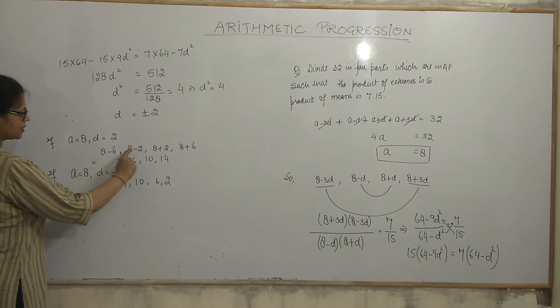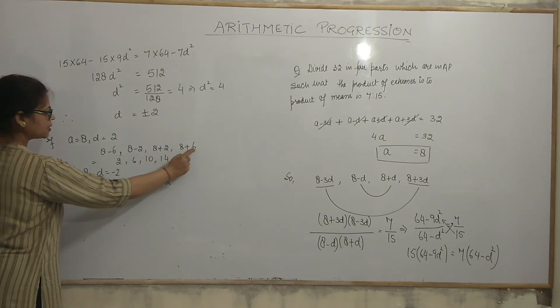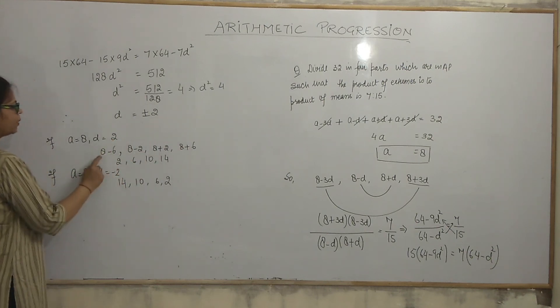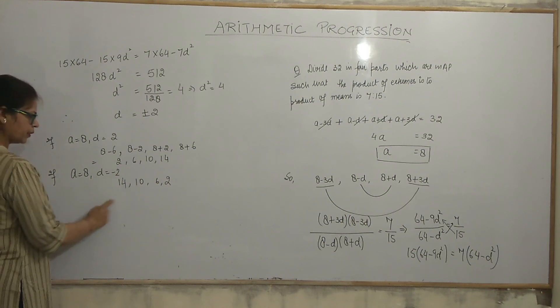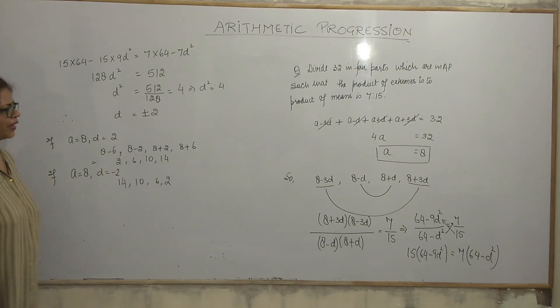The same thing we did in the previous question. a is equal to 8, d is equal to 2. Then, I mean, I am taking two values of d, plus 2 and minus 2. So, I will obtain two series. Numbers are 8 minus 6, 8 minus 2, 8 plus 2, 8 plus 6. That is 2, 6, 10, 14. And with d equals minus 2, we get the same series. That's all for this exercise today.